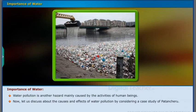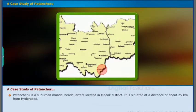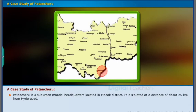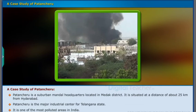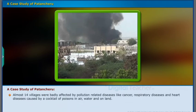Now let us discuss about the causes and effects of water pollution by considering a case study of Patancheru. Patancheru is a suburban mandal headquarters located in Medak district, situated at a distance of about 25 kilometers from Hyderabad. It is the major industrial center for Telangana state and one of the most polluted areas in India. Almost 14 villages were badly affected by pollution-related diseases like cancer, respiratory diseases, and heart diseases, caused by a cocktail of poisons in air, water, and on land.